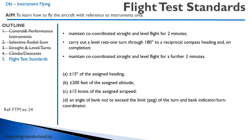For the flight test, the examiner expects you to fly with fogles on — or whatever view-limiting device your flying school uses. You'll maintain straight and level flight for two minutes, do a 180-degree turn at a rate-one turn, then fly straight and level for another two minutes. You're expected to maintain within 15 degrees of heading, 200 feet of altitude, and 15 knots of airspeed. For that turn, use a rate-one turn on your turn coordinator.